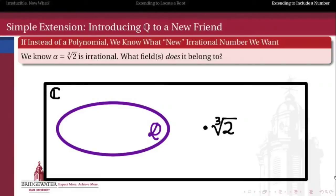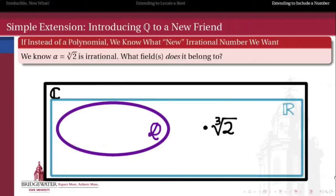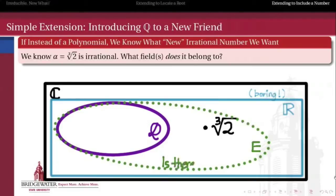So what about going the other way around? How do we introduce Q, the rational number system, to a new friend? Instead of starting with a polynomial, we know what new irrational number we want in our field. So let's take the cube root of 2 — you can convince yourself using basic number theory that it's irrational, so it doesn't belong to Q. But what field does it belong to? It belongs to the complex numbers, but that's not an interesting example. We would like to find the most parsimonious field: the one that's bigger than Q but only just big enough to contain the cube root of 2. We'd really like to figure out if there is a smallest extension field E that contains the rationals and also contains the cube root of 2.